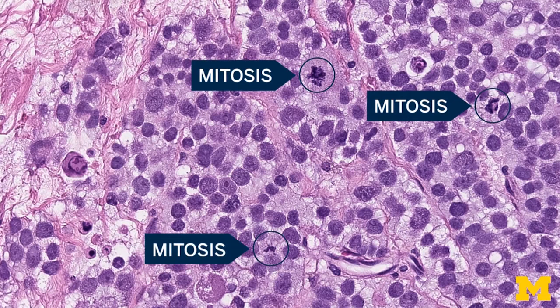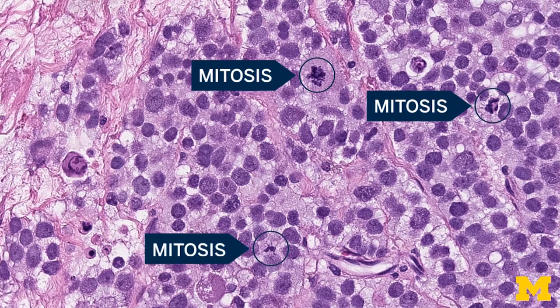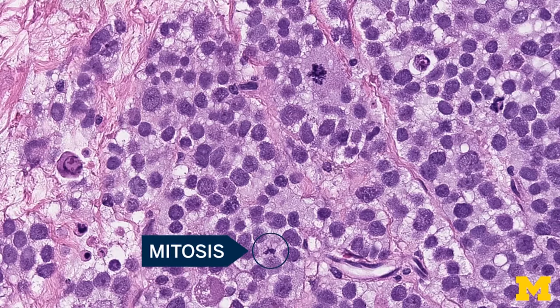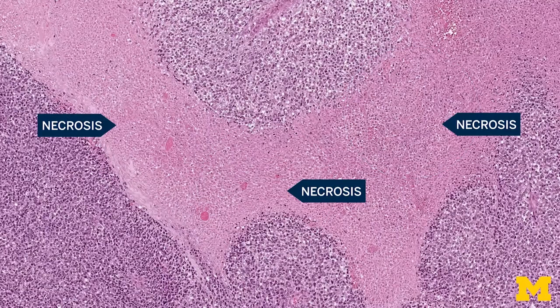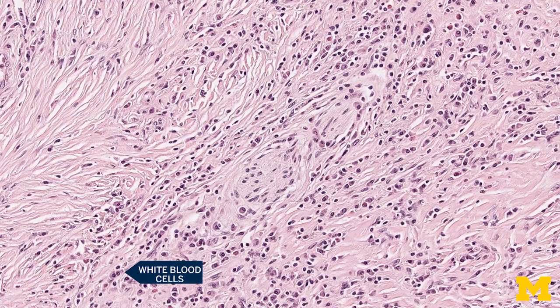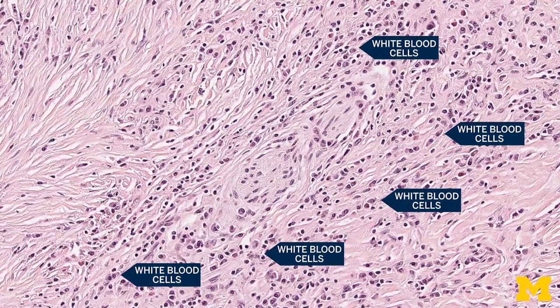Some features of cancer include sheets of very large cells that are rapidly dividing, indicated by many cells with condensed DNA called mitoses. Cancer can also often show necrosis, or tissue death, because the cells are so rapidly dividing that they outgrow their blood supply. Inflammatory processes show numerous white blood cells of different types within the tissue, which can either indicate the body's immune system fighting infection, or in some cases attacking itself, known as autoimmune disease.